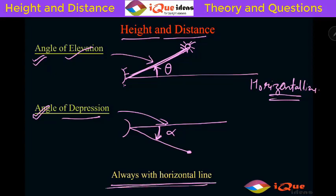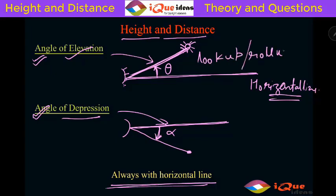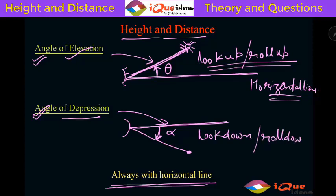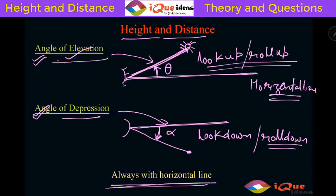Whether you look up or look down, just measure what angle you move with respect to the horizontal line. If you roll up your eyes, there will be an angle of elevation. If you look down or roll down, the angle formed with the horizontal line will be the angle of depression. So this is the very basic thing about angle of elevation and angle of depression.